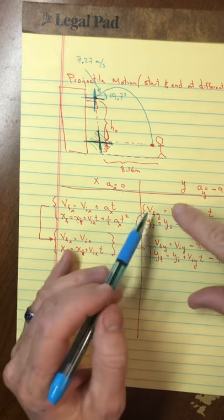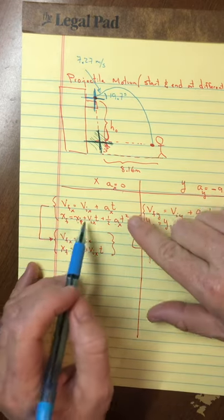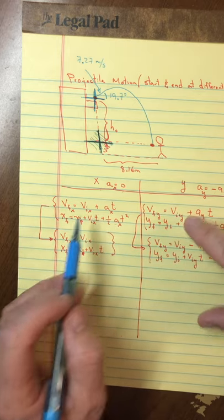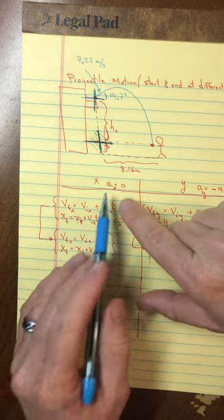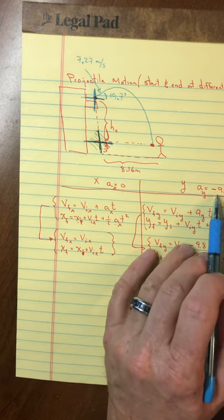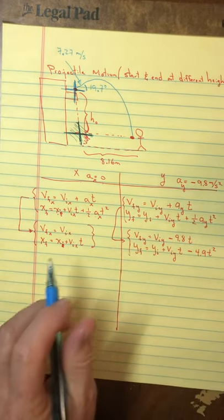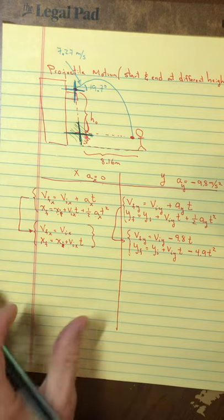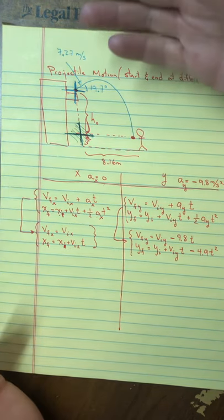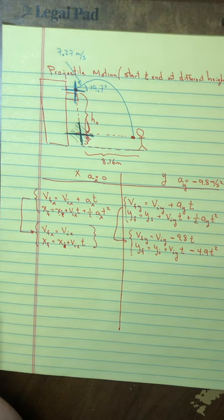I encourage you to always draw a little diagram — it really helps your understanding. I know I'm taking a long time to get there, but I want you to understand my thinking: why I made this two-column chart, why I took constant acceleration equations, why I put zero for the acceleration in the x direction, and why I put negative 9.8. Also important is choosing a grid — know that you can put the grid anywhere you want.